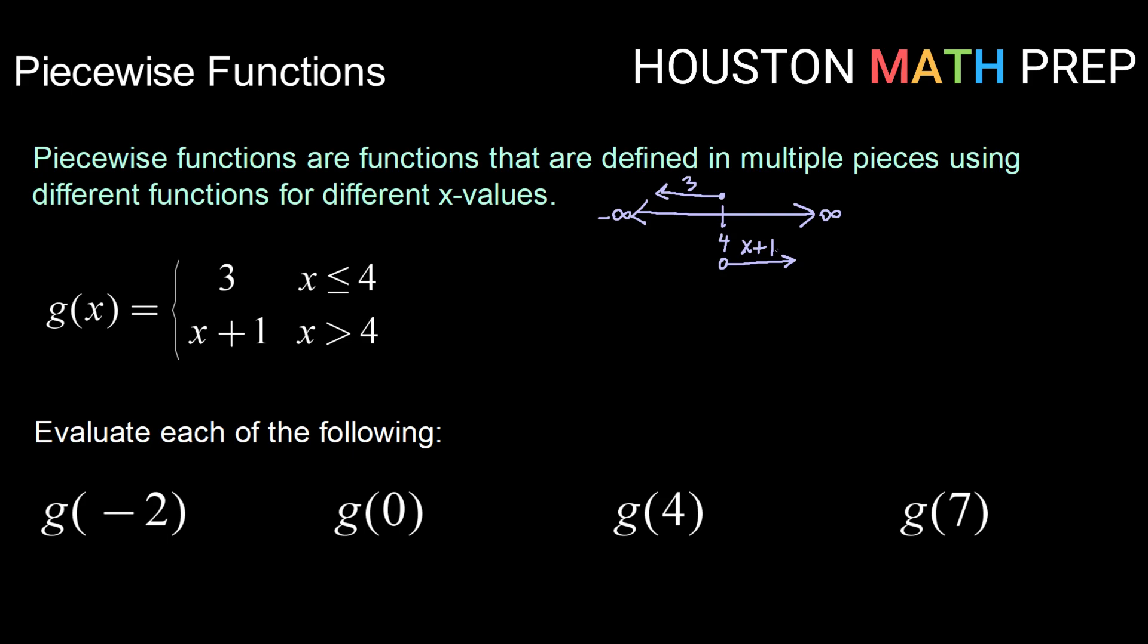So let's evaluate some values. g of negative two. The first thing that we need to do is determine where does negative two fall. So here's four. Negative two would be somewhere to the left or less than. So that means we're going to use this piece of our function. So replacing all inputs with negative two we get three.